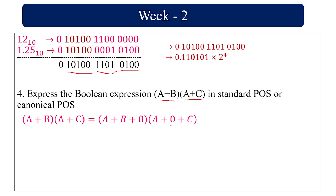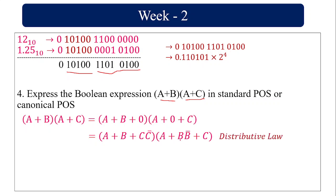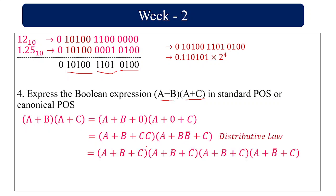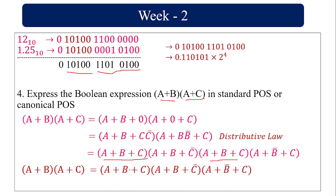Using the property that X·X bar equals 0, I replace the missing variable with its complement pair. For the first term, I add (C plus C bar) to A plus B, giving (A plus B plus C) into (A plus B plus C bar). For the second term, adding (B plus B bar) gives (A plus B plus C) and (A plus B bar plus C). Since A plus B plus C appears twice, it is written once. The canonical POS is the result.